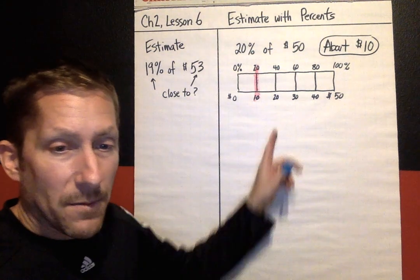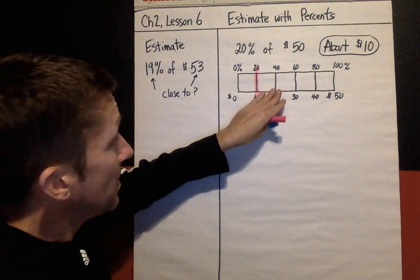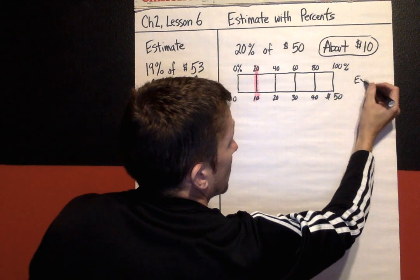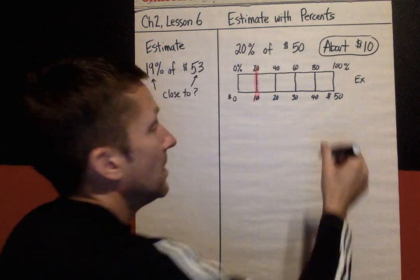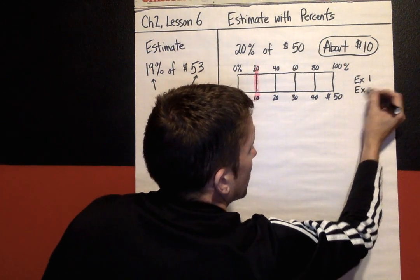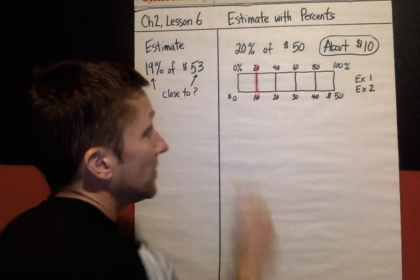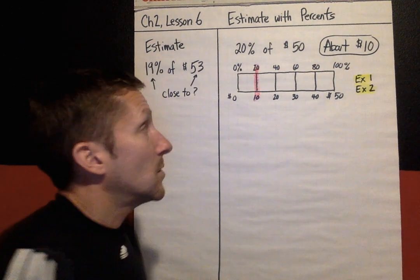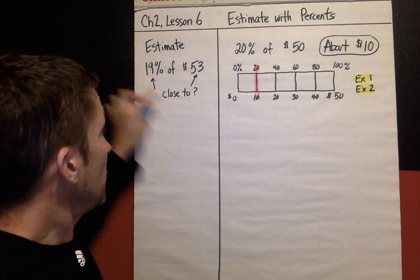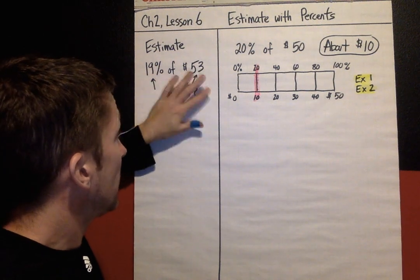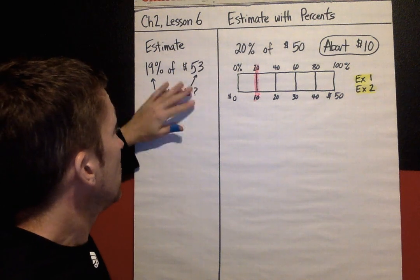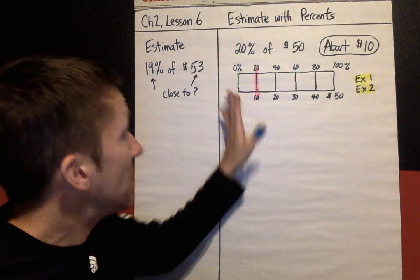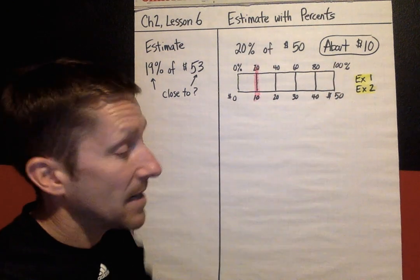A lot of your problems today are like this. If you see Example 1 or Example 2 next to a problem, a double bar diagram is a good strategy. First, get friendly numbers — adjust the percent and the amount. 19% we change to 20%, and 53 we change to 50. Then build your model with the friendly numbers and you get an estimate of about 10.